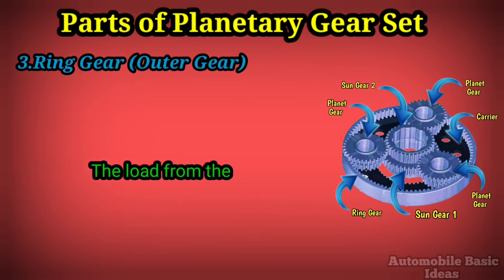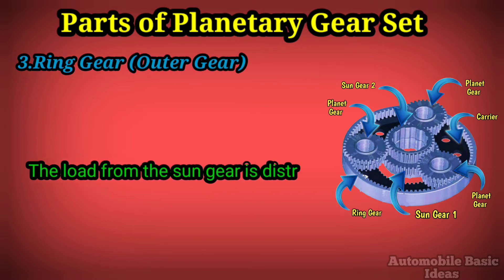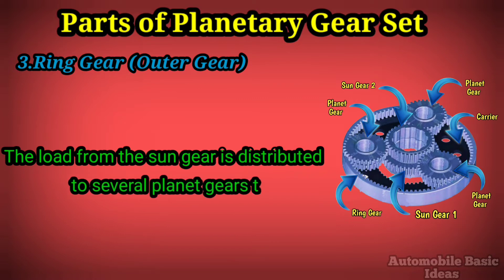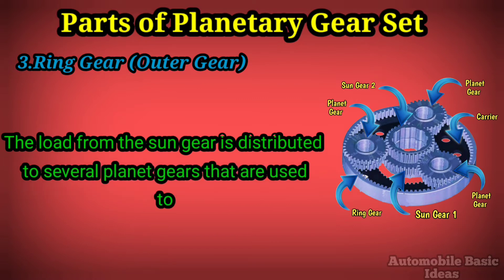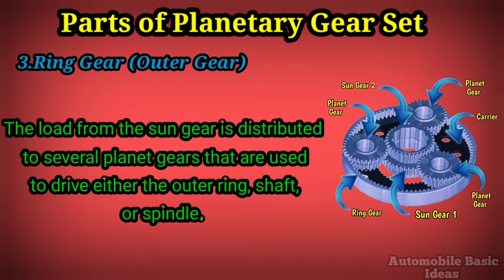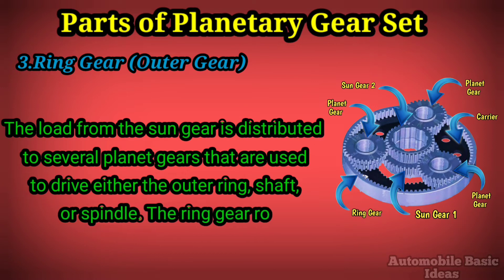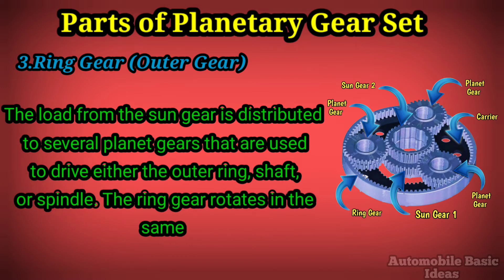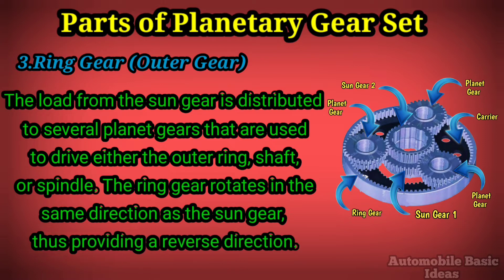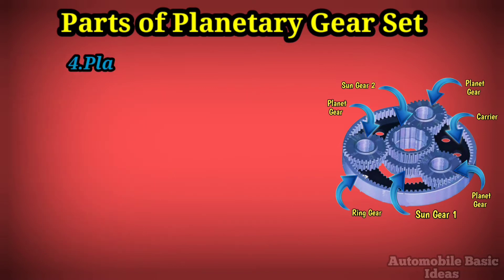Three: Ring gear — outer gear. The load from the sun gear is distributed to several planet gears that are used to drive either the outer ring shaft or spindle. The ring gear rotates in the same direction as the sun gear, thus providing a reverse direction.